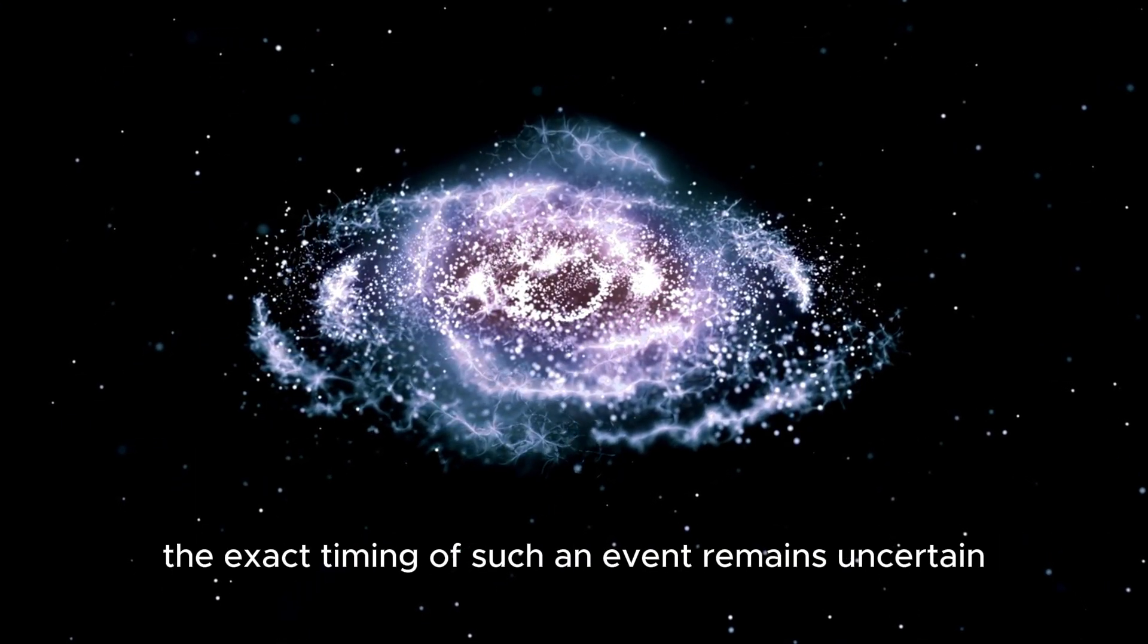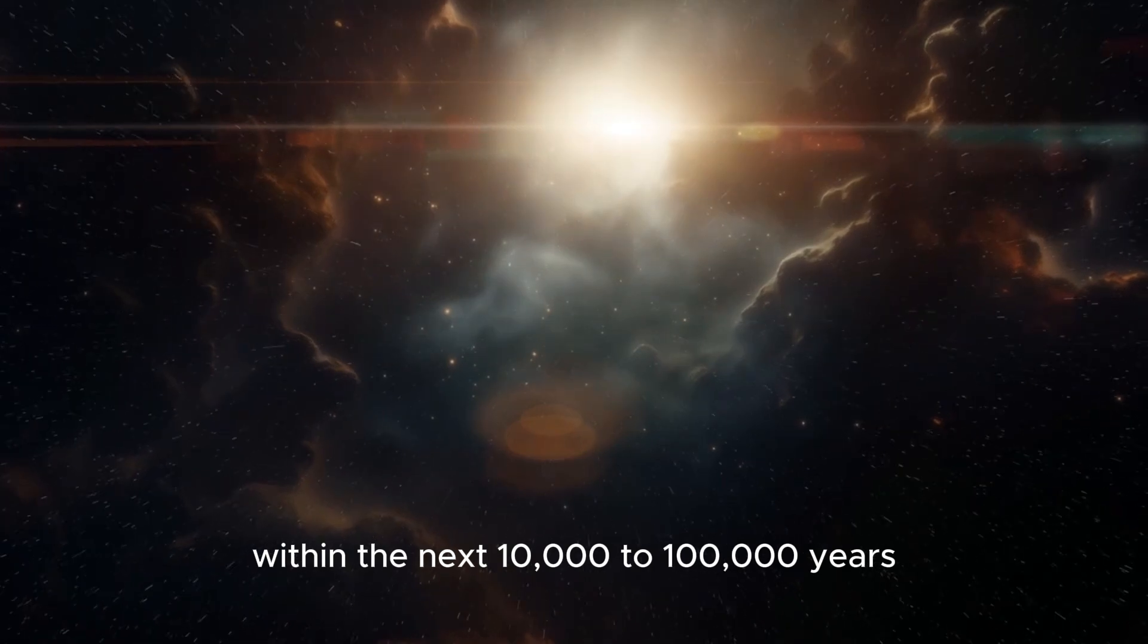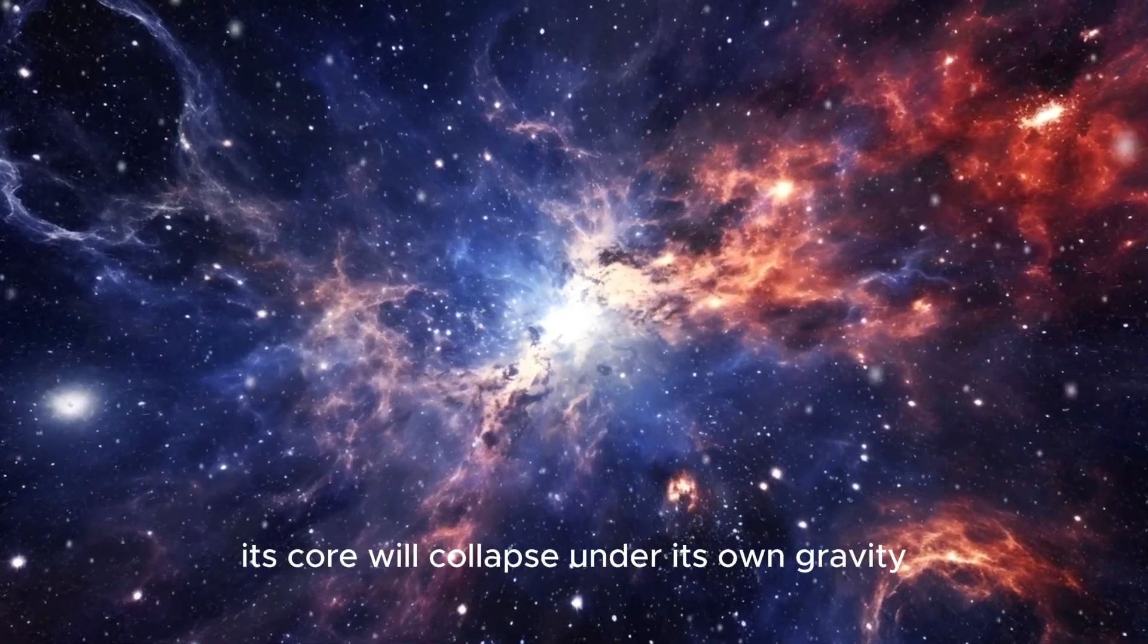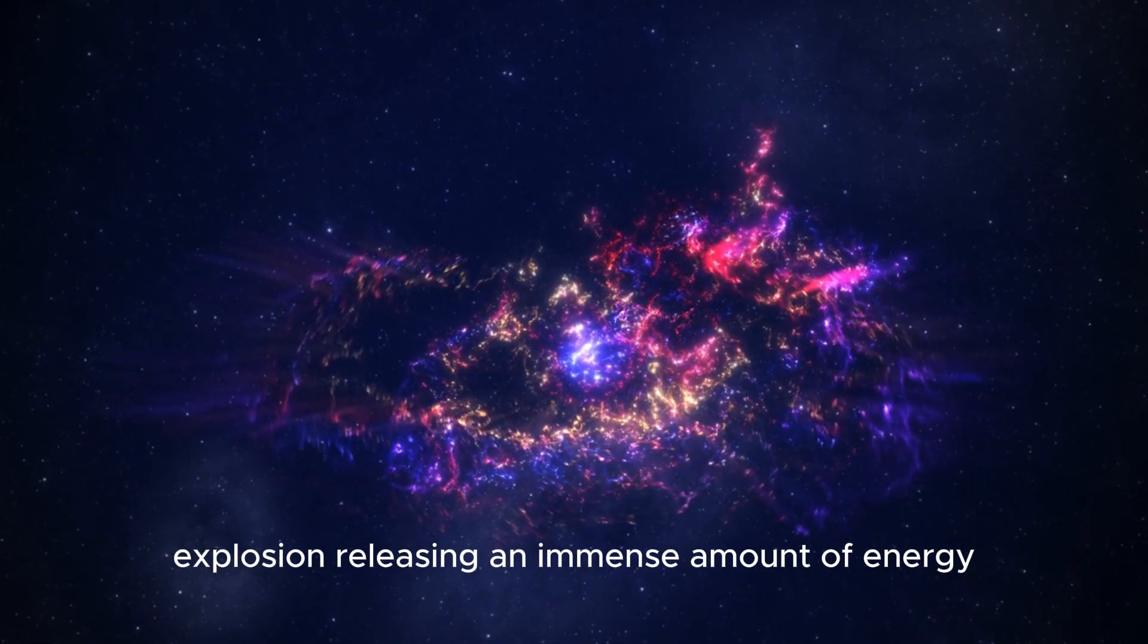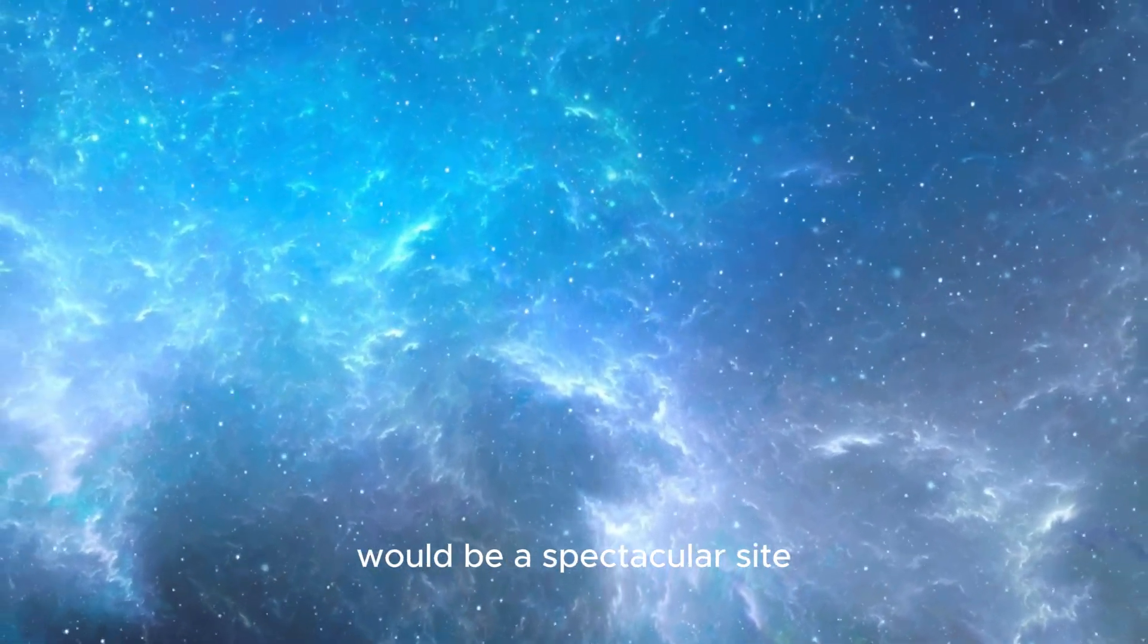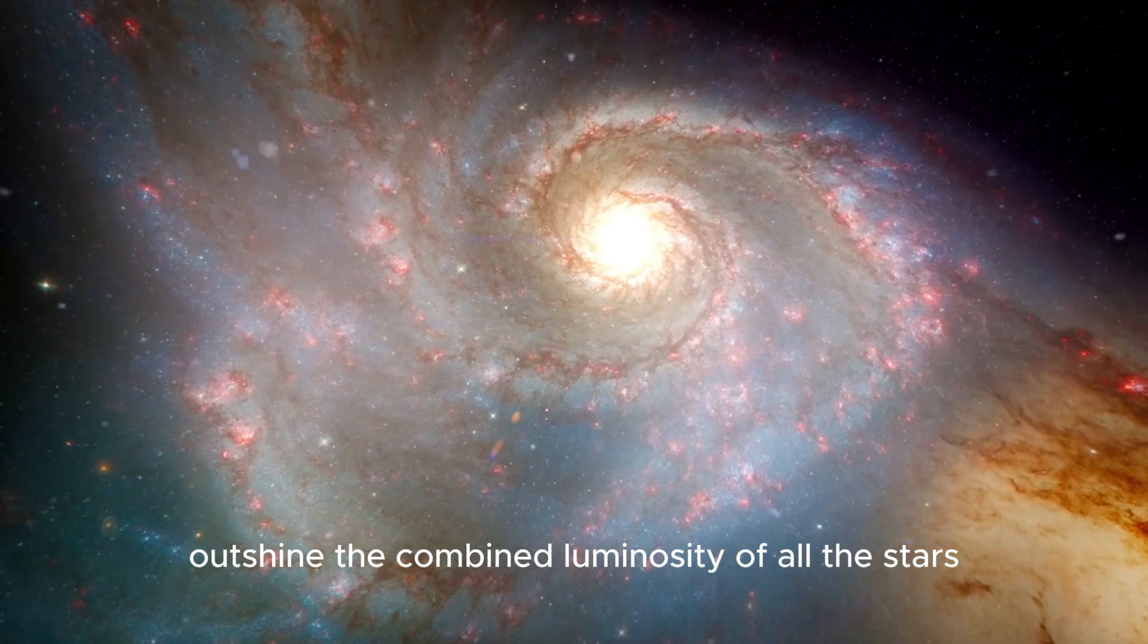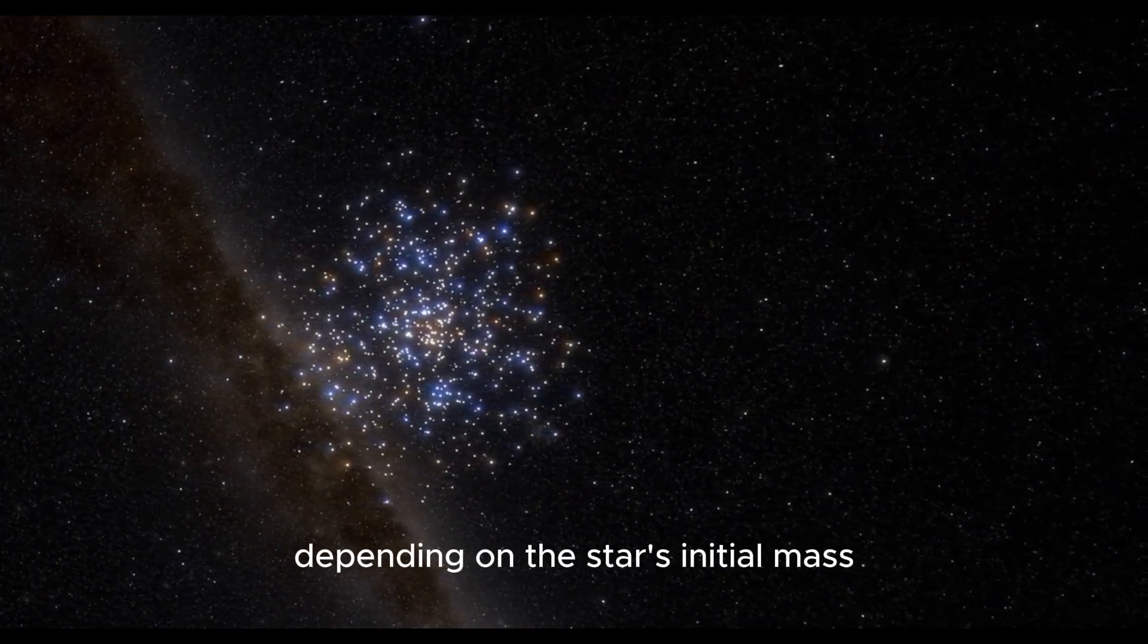One of the key aspects that fascinates astronomers is Betelgeuse's potential to undergo a supernova explosion. While the exact timing of such an event remains uncertain, scientists speculate it could happen any time within the next 10,000 to 100,000 years. When Betelgeuse exhausts its nuclear fuel, particularly during its fusion processes from helium to heavier elements like carbon, oxygen, silicon, and eventually iron, its core will collapse under its own gravity. This catastrophic collapse will trigger a powerful explosion, releasing an immense amount of energy and material into space. The aftermath of a supernova explosion from Betelgeuse would be a spectacular sight, visible even from Earth despite its distance of approximately 650 light-years. Such an event would temporarily outshine the combined luminosity of all the stars in the Milky Way galaxy and could potentially leave behind a neutron star or even a black hole, depending on the star's initial mass.